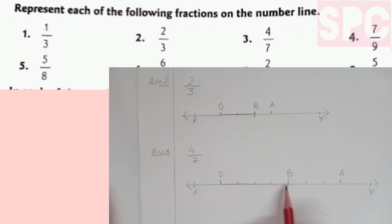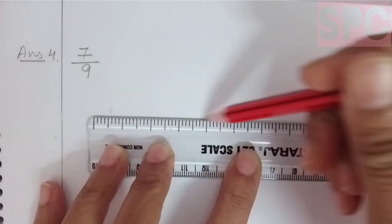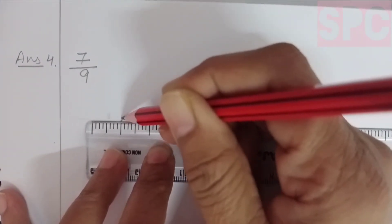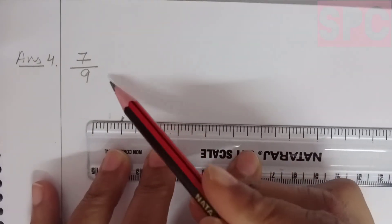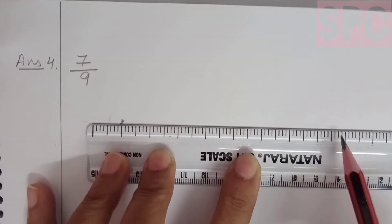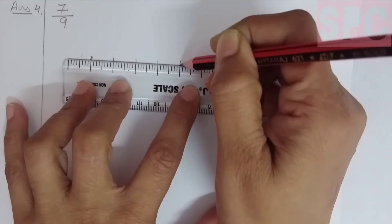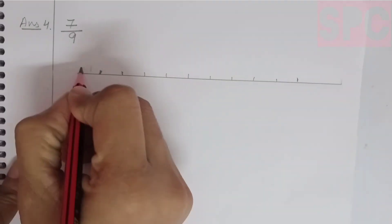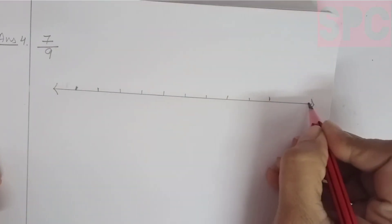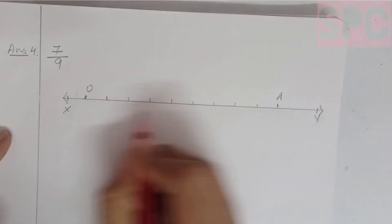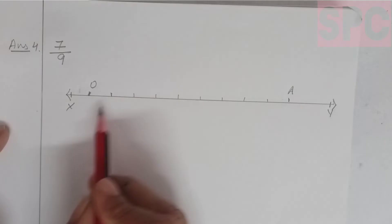Similarly, question number 4 is 7 by 9. Again, we will draw a number line XY. On this number line, we will take two points O and A which will be 9 units apart. We will divide OA into 9 equal parts. Out of 9 equal parts, how many parts we have to consider? The numerator is 7, so we will consider 7 parts. At the end of the seventh part, this point will be marked as B. Therefore, on this number line, OB will represent the fraction 7 by 9.